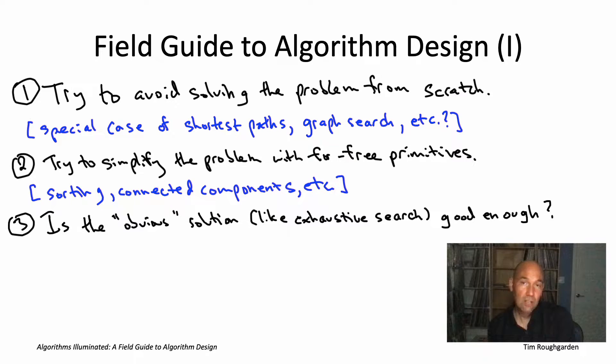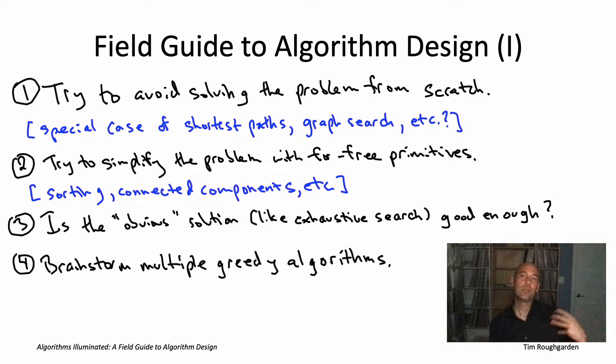If the obvious solution is not good enough, now you need to actually start thinking about algorithm design paradigms. And as we've said many times, often the best place to start brainstorming is the greedy algorithm design paradigm. So for many problems, you can try to brainstorm a bunch of different greedy algorithms and try them out on small examples. Most likely, all of those greedy algorithms will be wrong. They will fail on some inputs. But actually seeing concretely the inputs on which those greedy algorithms fail and why they fail, that inevitably helps you understand the problem better and see more clearly what tools are actually going to be needed.